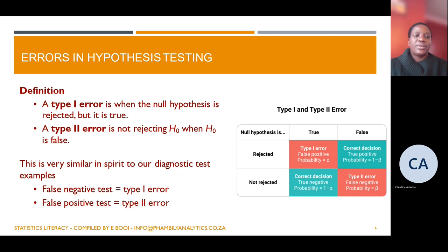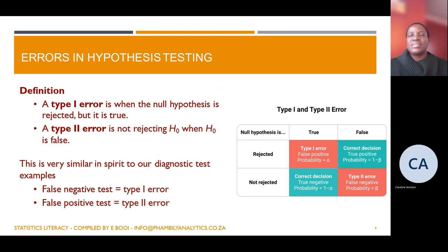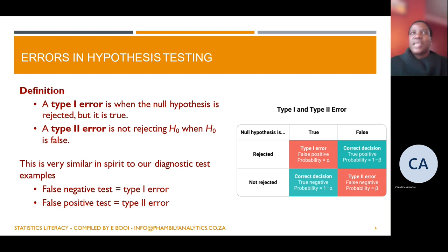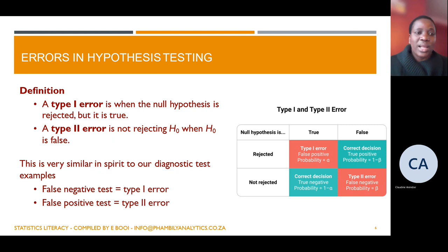A Type 1 error: you will be making this error every time you are doing your hypothesis testing as a researcher. For example, if your assumption is that the prices at ShopRite are equal to the prices at Pick n Pay — that has an equality sign in the null hypothesis. If you reject that statement you are making, you are committing a Type 1 error.